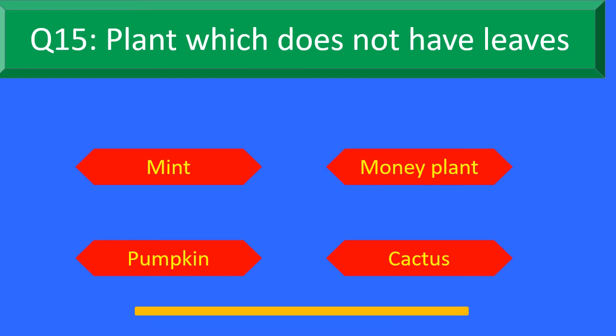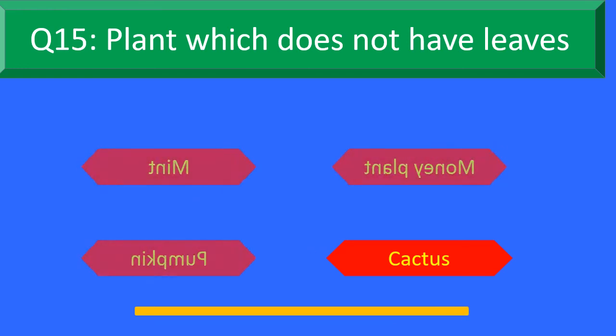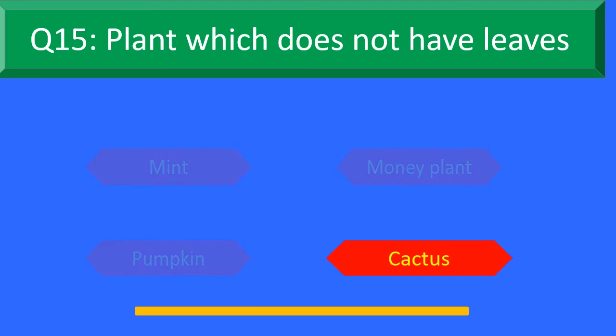And your time is up. The right answer is Option D: Cactus. The plant which does not have leaves is Cactus.